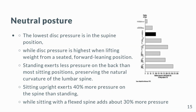Disc pressure varies depending on the position of the body during activities. The lowest disc pressure is in the supine position, while disc pressure is highest when lifting weight from a seated forward leaning position. Standing exerts less pressure on the back than most sitting positions, preserving the natural curvature of the lumbar spine. Sitting upright exerts 40% more pressure on the spine than standing, while sitting with a flexed spine adds about 30% more pressure.